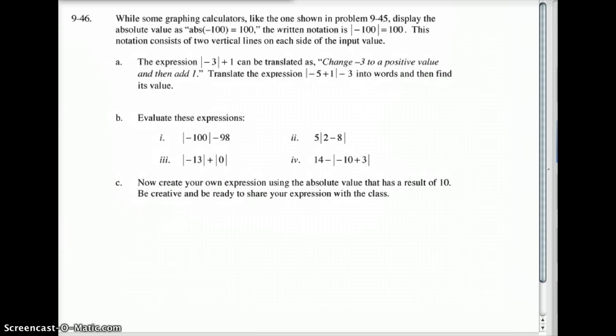So let's take a look at what I mean by that. If you look at letter B here, evaluate these expressions. So here I've got the absolute value of negative 100 minus 98. Like I told you, the absolute value bars act like a parentheses. So we first need to find the absolute value of negative 100, which would be positive 100. Then I do the positive 100 minus 98, which would be 2. So the answer for this first one here would be 2.